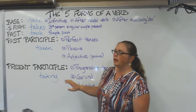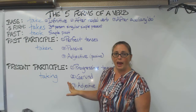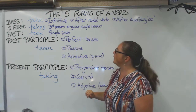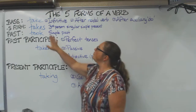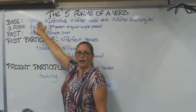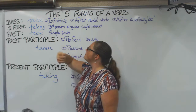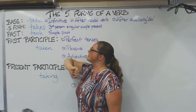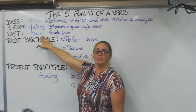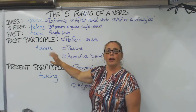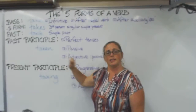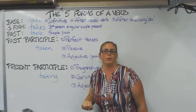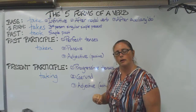I'm using the verb 'take' as the example here. So the base form is 'take', the s form is 'takes', the past is 'took', the past participle is 'taken', and the present participle is 'taking'.